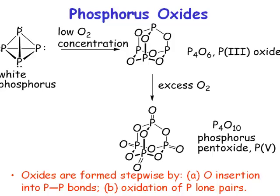That goes by the not incredibly helpful name of phosphorus pentoxide. You can buy phosphorus pentoxide, but what you have to remember is that phosphorus pentoxide should be called diphosphorus pentoxide because it has the empirical formula of P2O5. It's not just PO5 — if it were PO5, the oxidation state would be +10, which would be highly unlikely or frankly impossible. So phosphorus pentoxide has the empirical formula P2O5; the actual molecule is P4O10.